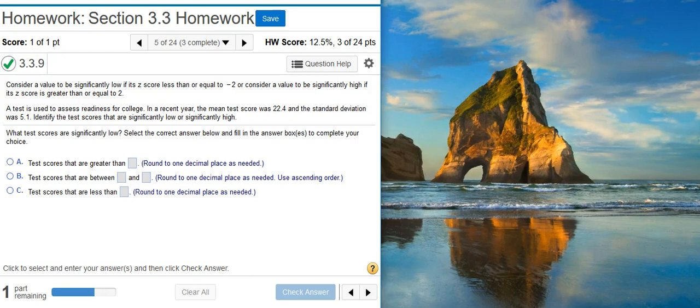Here's our problem statement. Consider a value to be significantly low if its z-score is less than or equal to negative 2, or consider a value to be significantly high if its z-score is greater than or equal to 2. A test is used to assess readiness for college. In a recent year, the mean test score was 22.4 and the standard deviation was 5.1. Identify the test scores that are significantly low or significantly high.